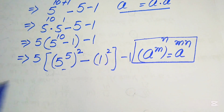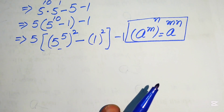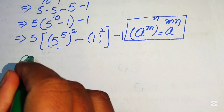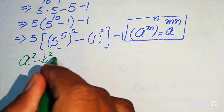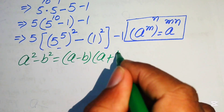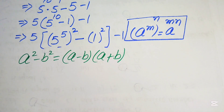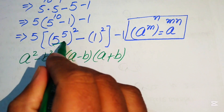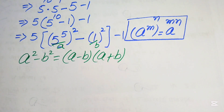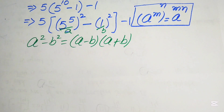Next, we use the algebraic formula a squared minus b squared equals a minus b times a plus b. Here, our a is 5 to the power of 5 and our b equals 1.